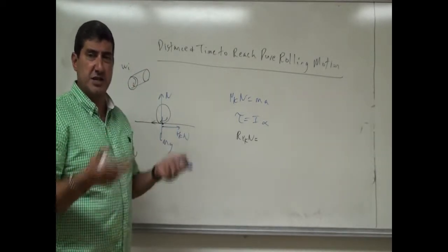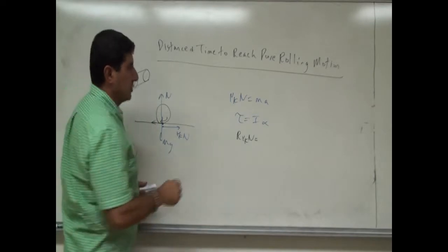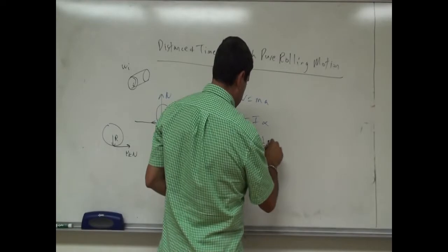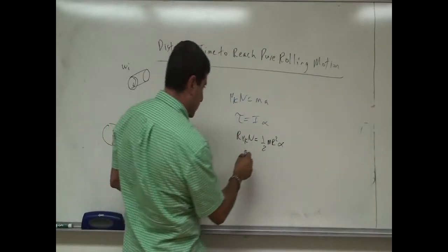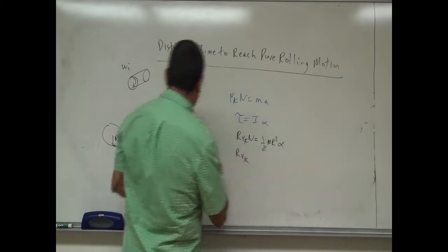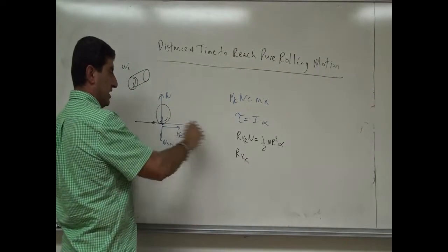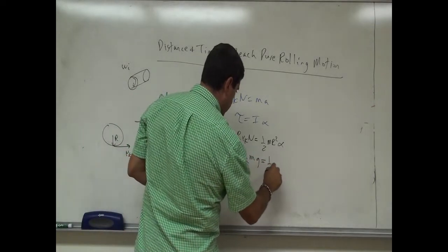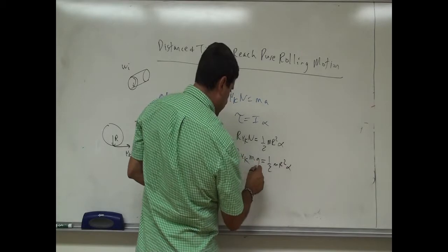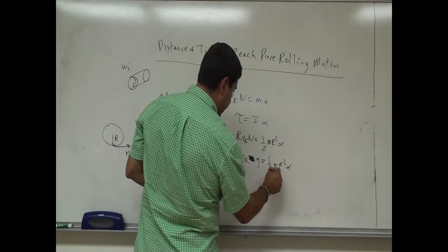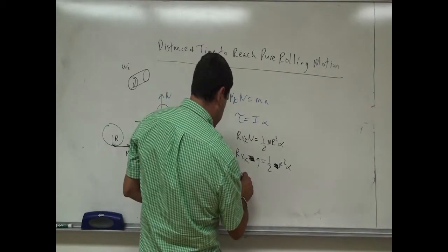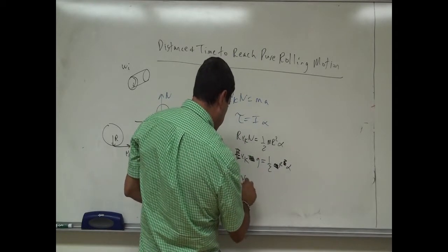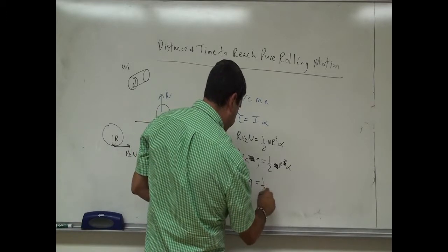The torque due to the friction force equals the radius times the friction force μk·N, so R·μk·N. For a solid cylinder, the moment of inertia is ½·m·r². On a flat horizontal surface, the normal force equals mg. So we get R·μk·mg = ½·m·r²·α. The m's cancel and one r cancels, giving μk·g = ½·r·α.